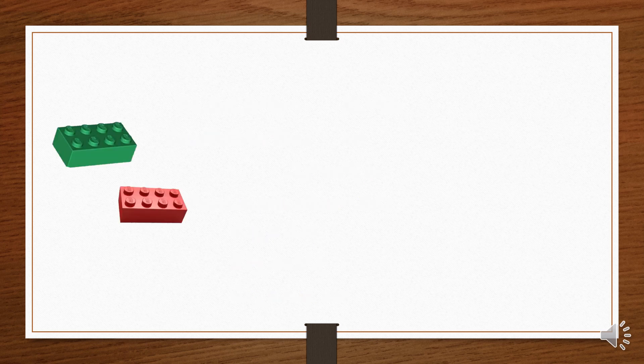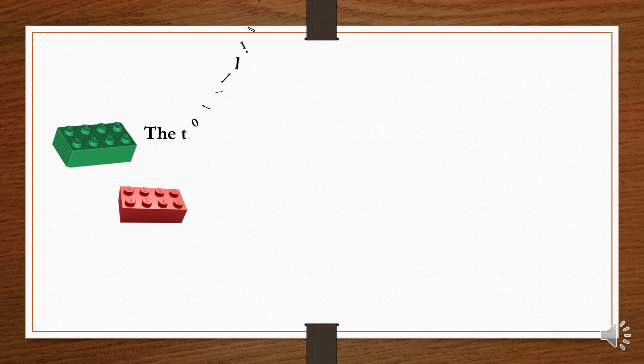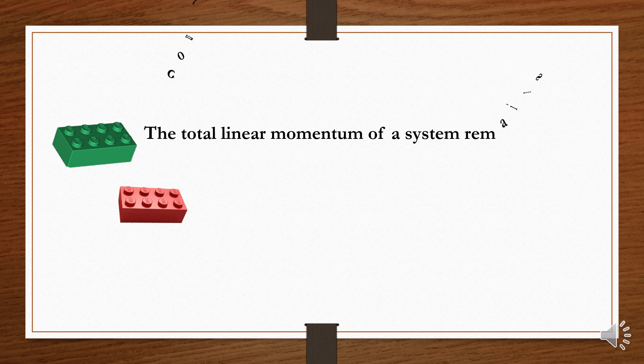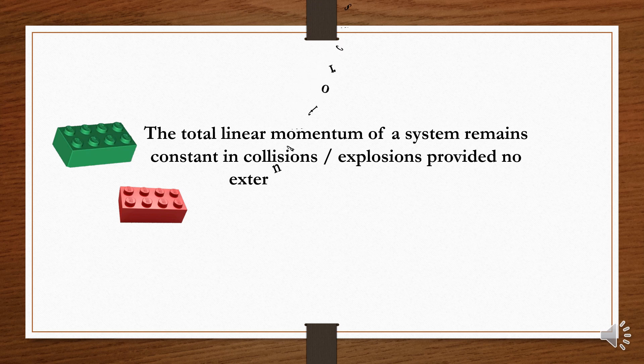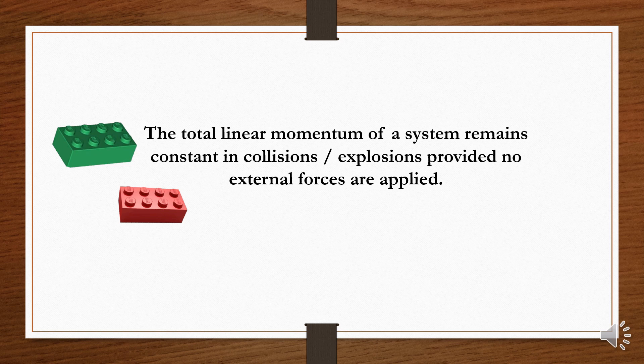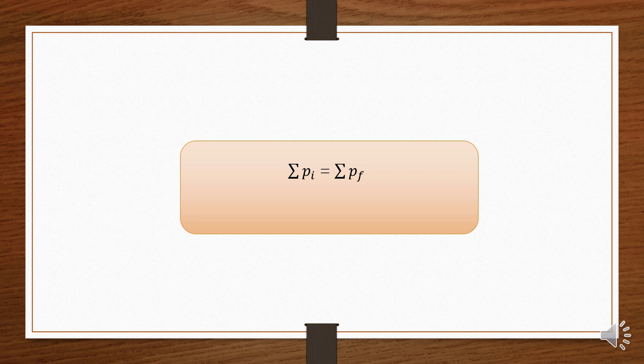So, the principle of conservation of linear momentum is: the total linear momentum of a system remains constant in collisions or explosions provided that no external forces are applied. In terms of formula, we can conclude that the summation of P initial is equal to the summation of P final.